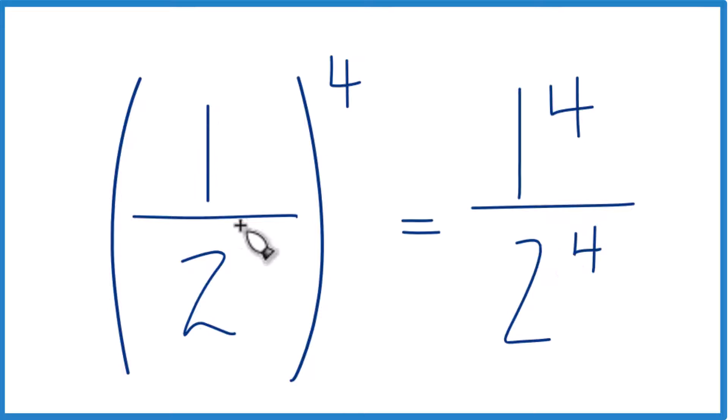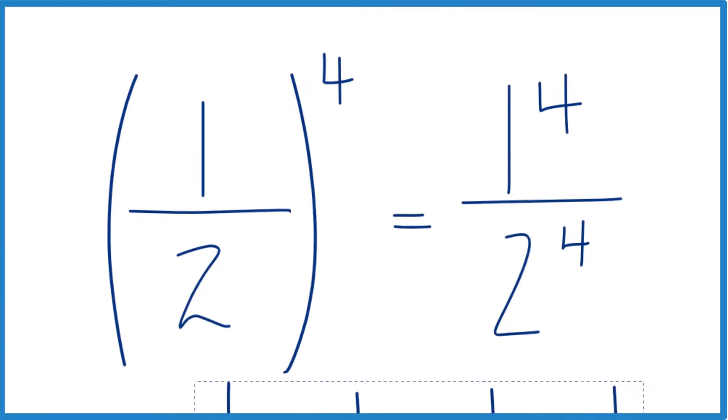Because really we're taking one-half times one-half times one-half times one-half. That's one-half to the fourth. So like this here.